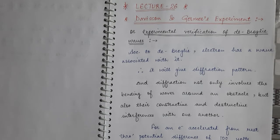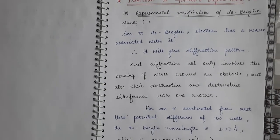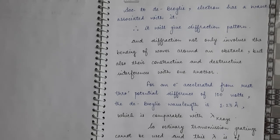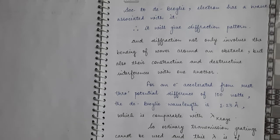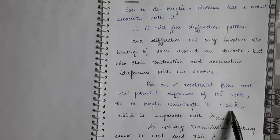Waves undergo constructive and destructive interference to give the diffraction pattern, that is maxima or minima. If an electron which was at rest is accelerated by a potential difference of 100 volts, then its de Broglie wavelength, by the relation 12.27 divided by root V, comes out to be 1.23 angstrom.